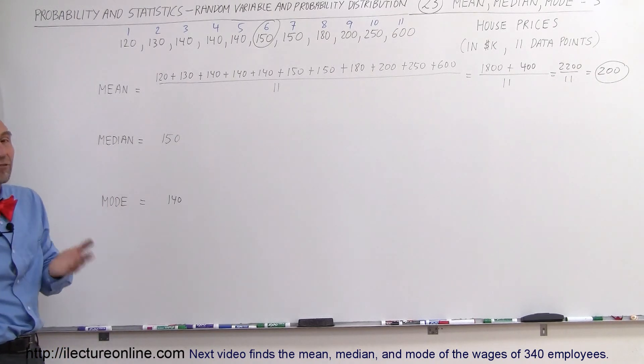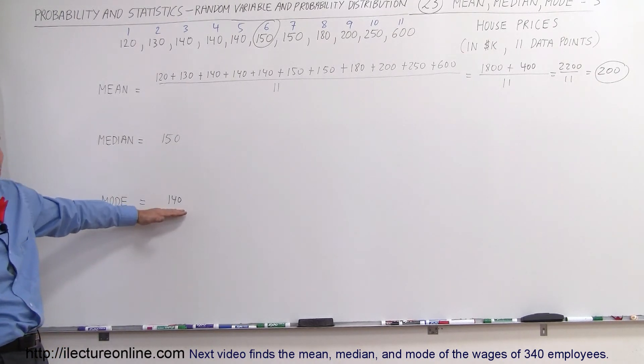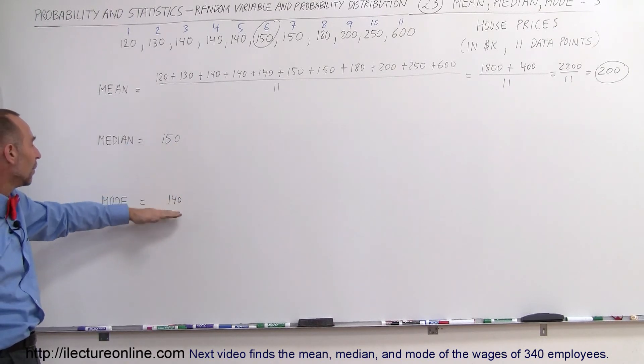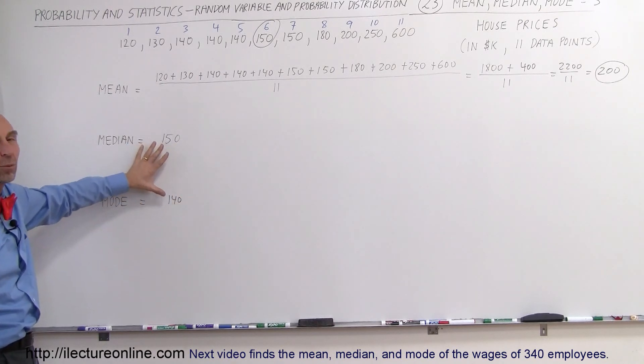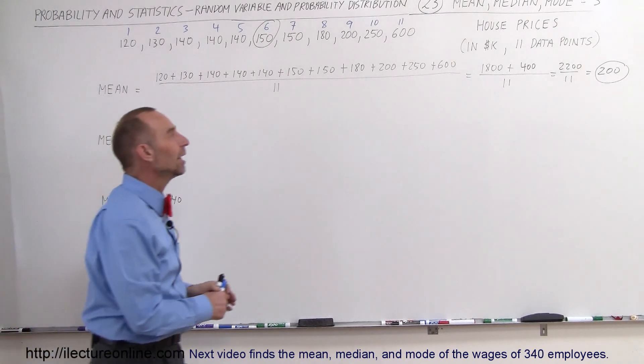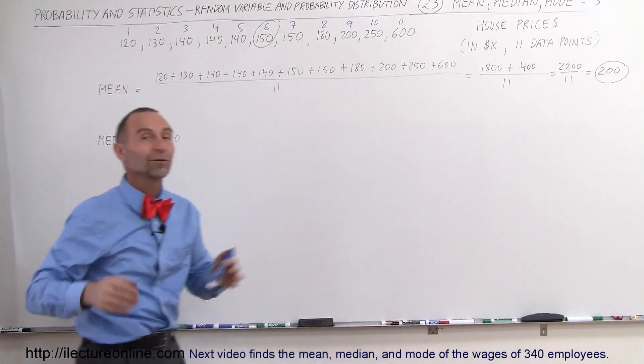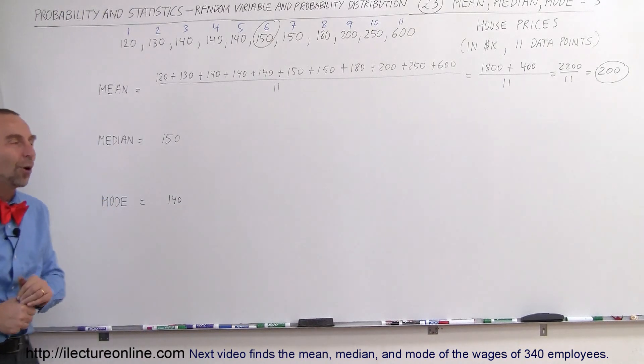The mode also gives you kind of a feel that more often houses were selling at 140 compared to any other price. So the median and the mode give you a much better feel for what prices are like for houses than if you're looking for the average, unless of course you're looking for the bigger and more expensive homes.